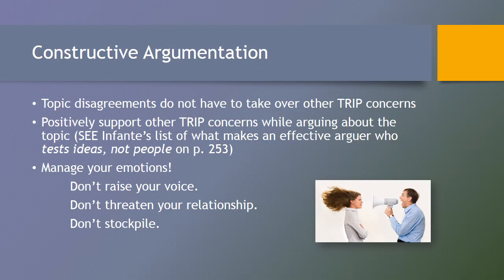Argumentation is one of the main communication skills needed to negotiate successfully. Constructive argumentation involves staying compassionate while staying calm and using the principles of argumentation to state and support your position. Topic disagreements do not have to take over other TRIP concerns — positively support other TRIP concerns while arguing about the topic. See Infante's list of what it takes to be an effective arguer who tests ideas and not people in this chapter. It's important to manage your emotions: don't raise your voice. Speaking in a calm voice does wonders for helping each of you to be heard and understood. Let the other person finish what they're saying and don't talk over each other. Constructive argumentation shouldn't sound like an episode of The View or Jerry Springer. It's amazing how quickly arguments between people can veer off topic concerns when emotions aren't managed.